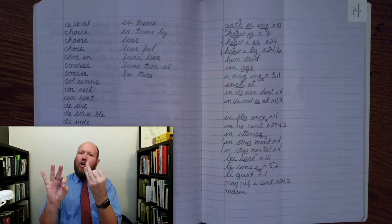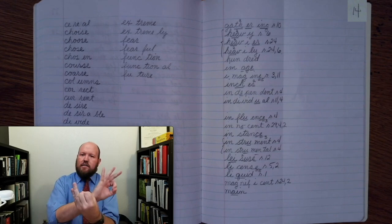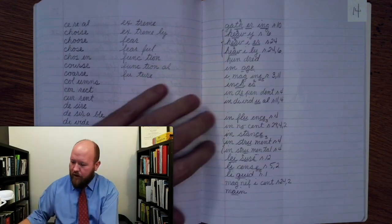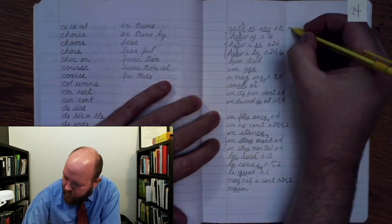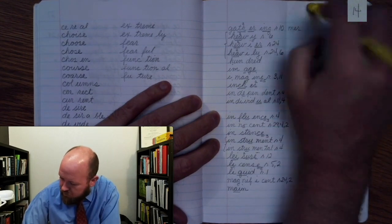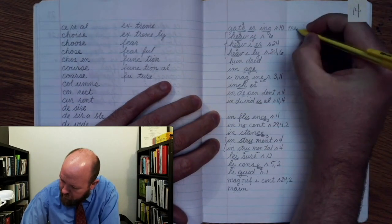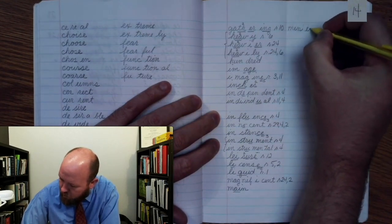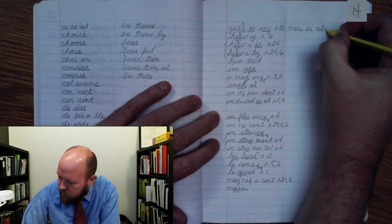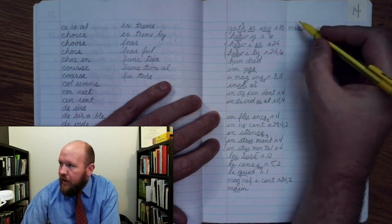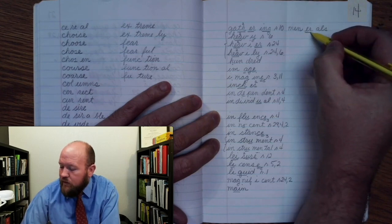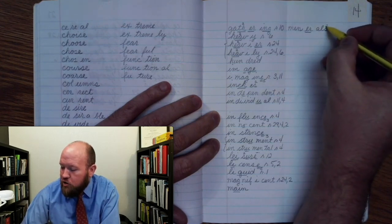M, i, n, ur, a, l, z, ur of her. Right, minerals. Min, ur, oops. Min, ur, als. M, i, n, ur, once, at, l, z, two, minerals.